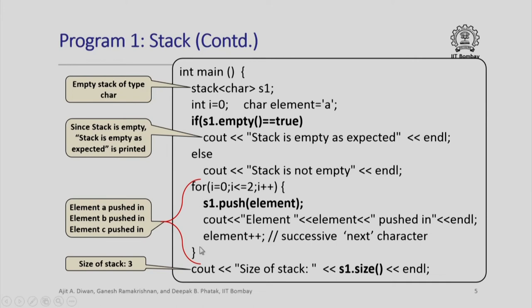Therefore, at the end of this iteration I would have pushed a, b and c as three characters on the stack. The size of the stack is indicated by s1 dot size. What size should it output at this stage? Well, three because there are three elements in the stack.